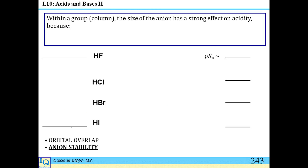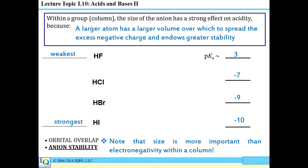Within a group, the size of the atom with the negative charge also has a strong effect on acidity: a larger atom has a larger volume over which to spread the excess negative charge, leading to greater stability. Looking at hydrohalic acids: HF gives F⁻, and moving down the column gives Cl⁻, Br⁻, and I⁻. These atoms get progressively larger as you go down the column, and the acids get progressively stronger as well.